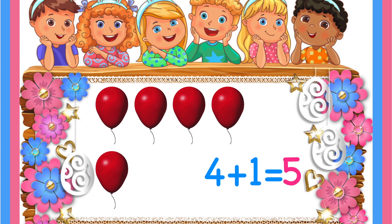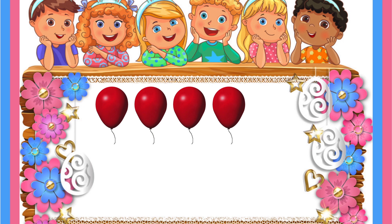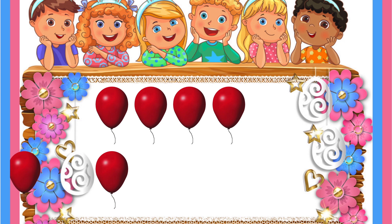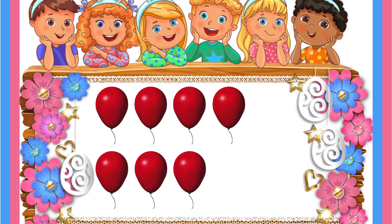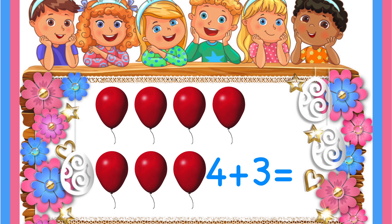Let's check another one. One, two, three, four balloons and your dad gives you another three balloons. So here the addition you are going to do is four plus three, which means you have four balloons and you are going to add another three. Let's count how many total balloons there are with you: one, two, three, four, five, six, seven. So the answer is seven.